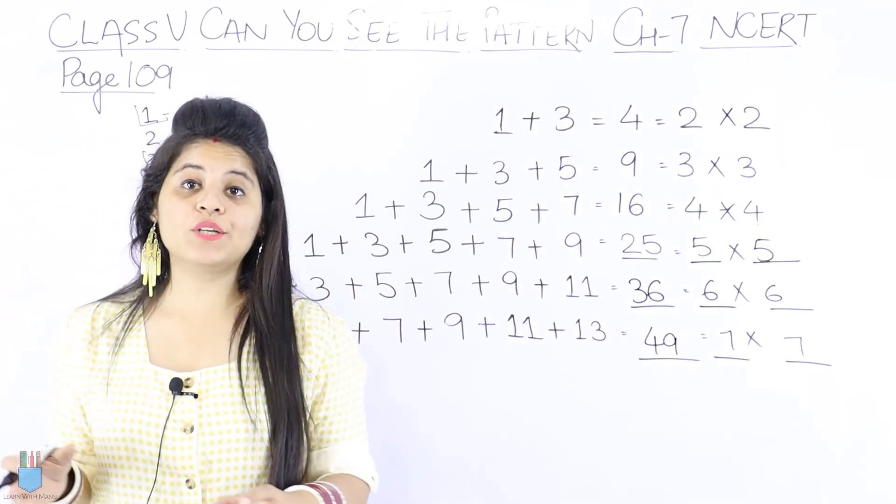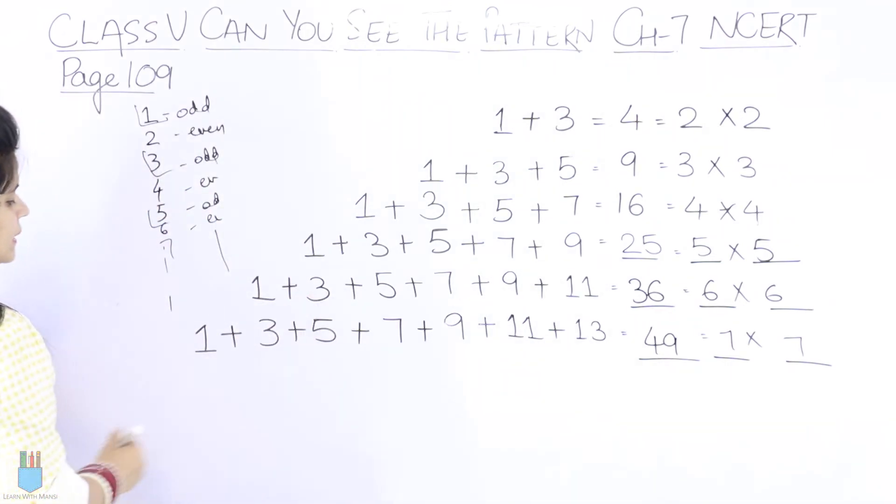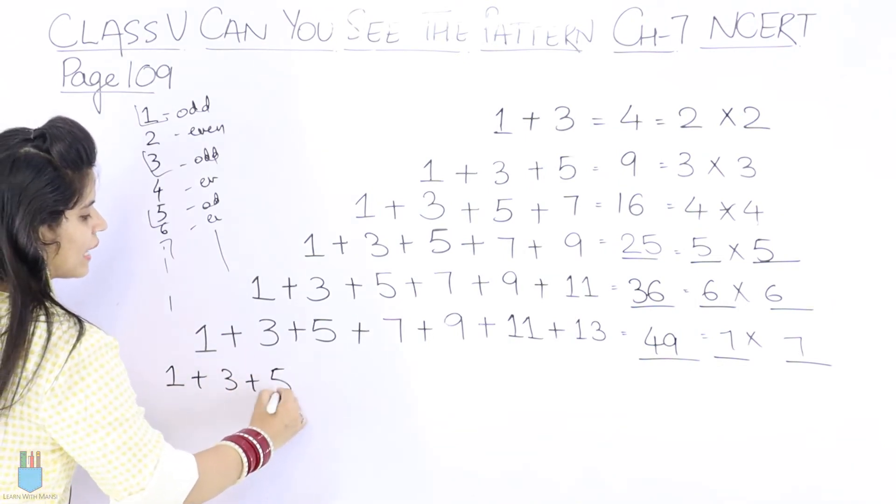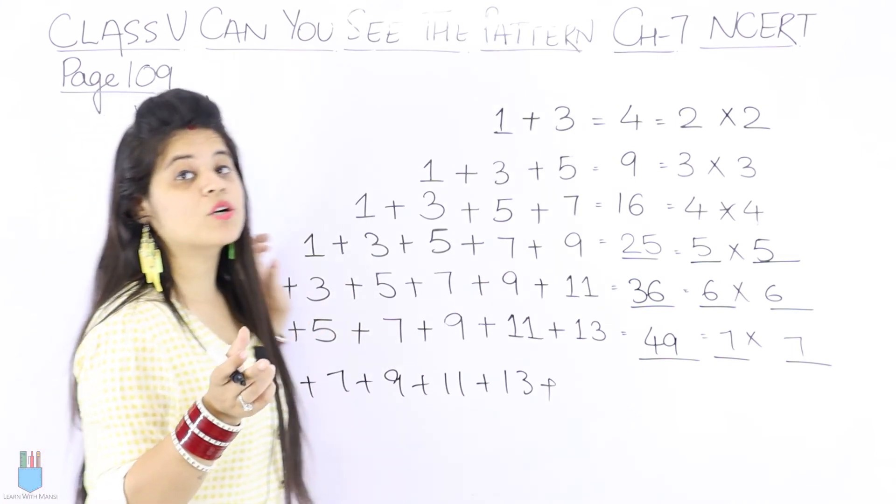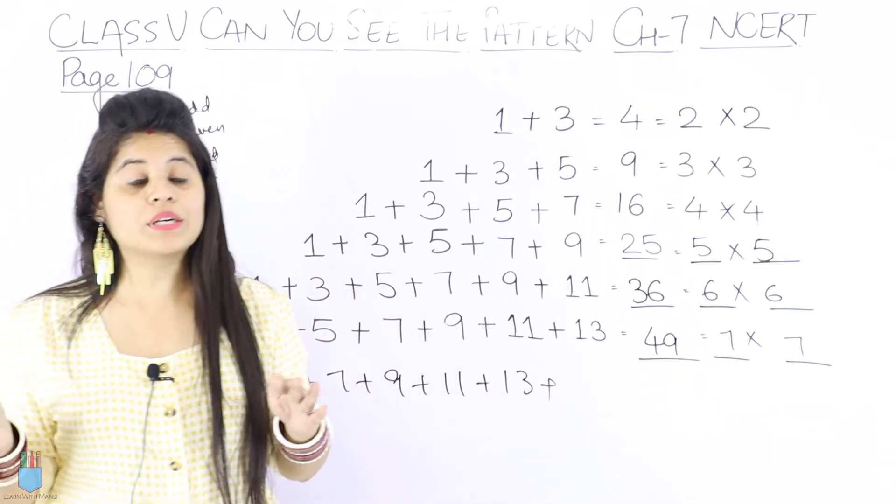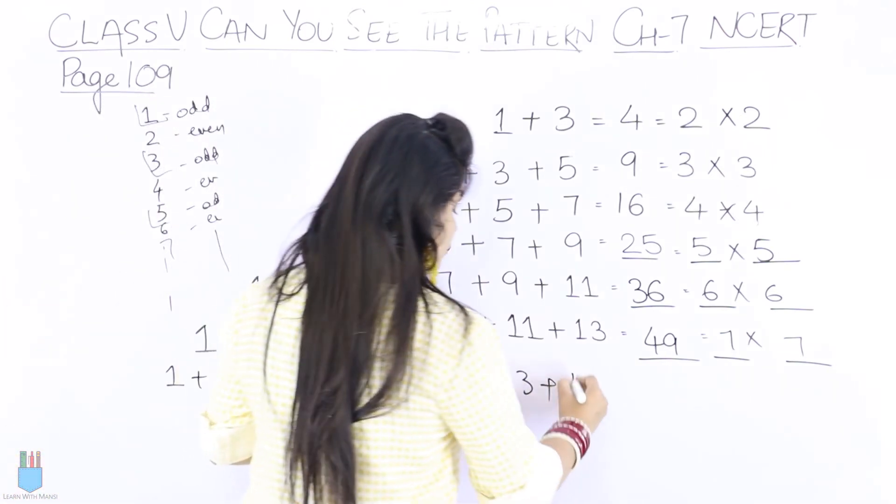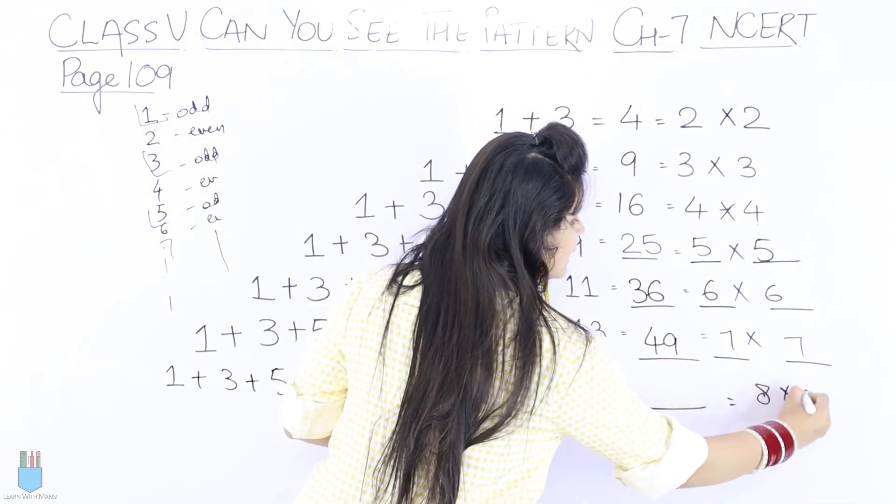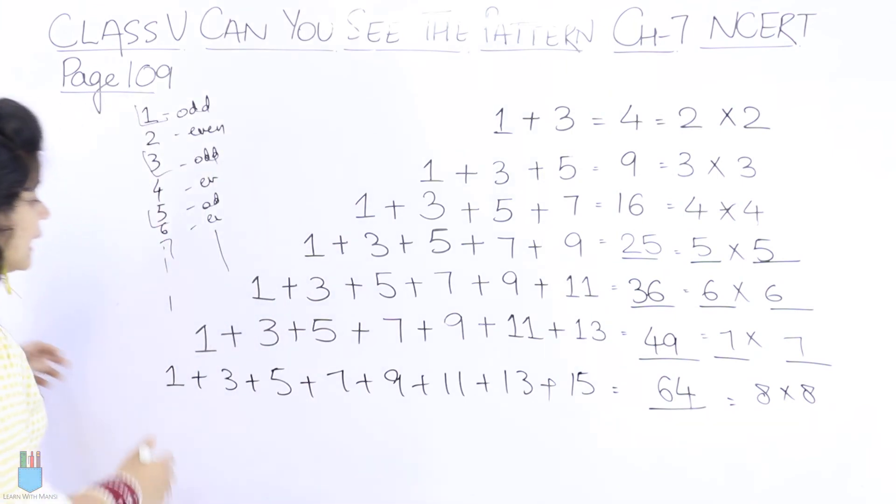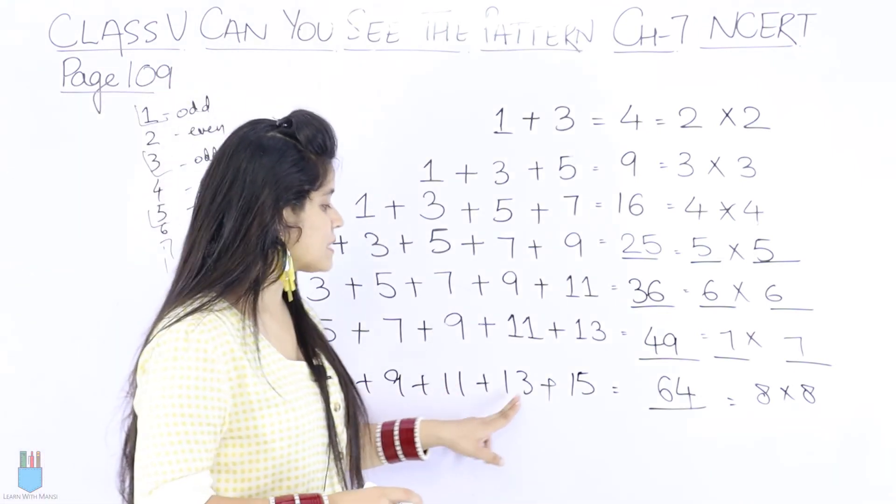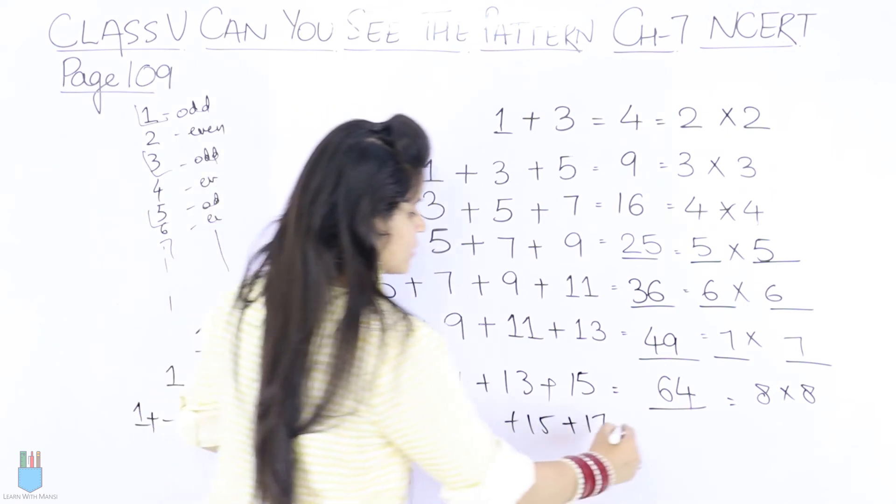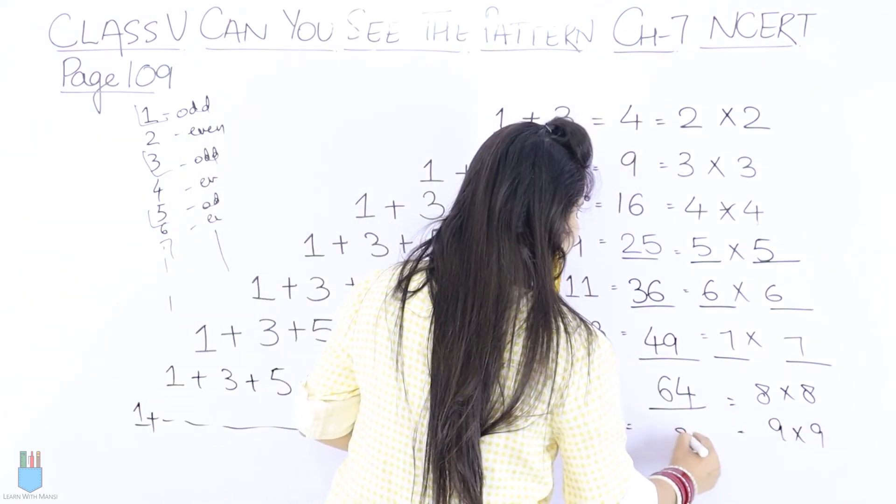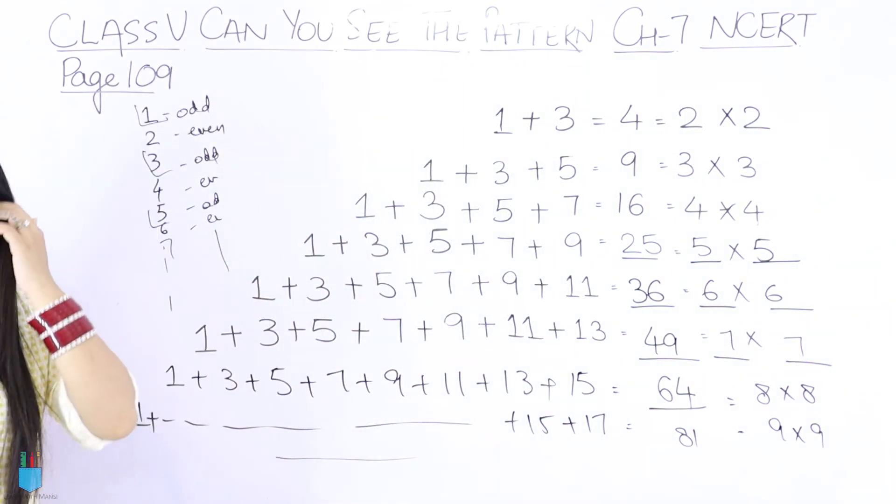We have said how far can you go? Now where can we go? We can go to 13. Next, what should happen? 1 plus 3 plus 5 plus 7 plus 9 plus 11 plus 13 plus 15 plus 17. What should happen? After 15, next odd number is 17. So what should happen? 9 into 9, which is 81. So we can take it somewhere.